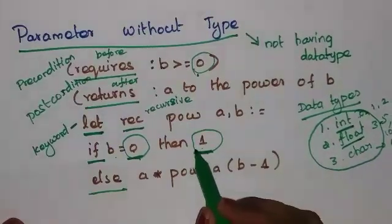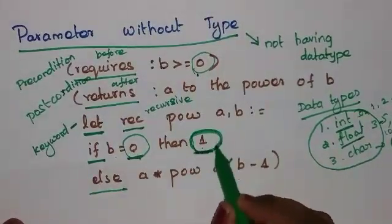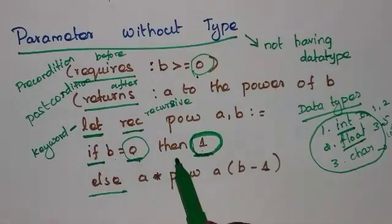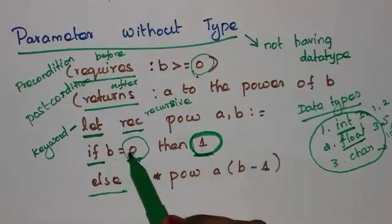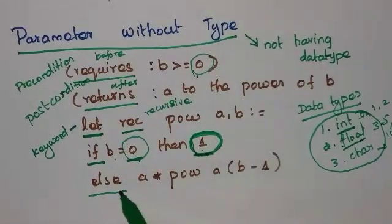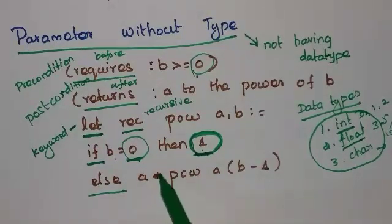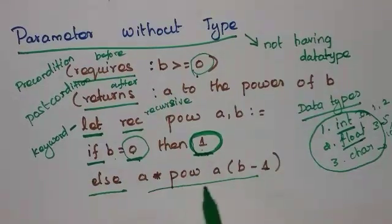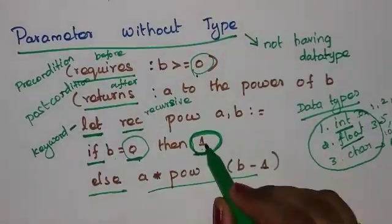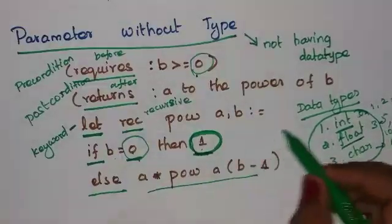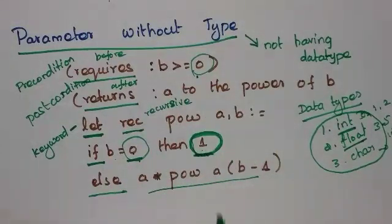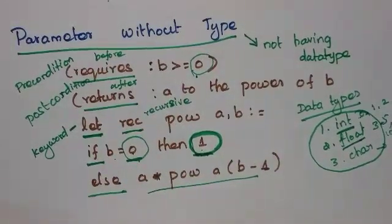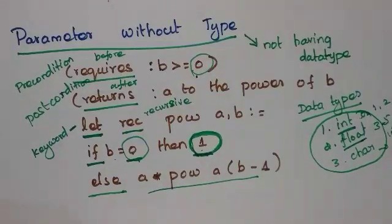Here, value is given but data type is not given. In this code, if the expression returns 1 in the then branch, so the entire expression has the data type int. Otherwise, a is multiplied with the expression using the operator, so a must also be an int data type. We know 0 and 1 are integer values, so this variable has int data type. This is about the parameter without data type.